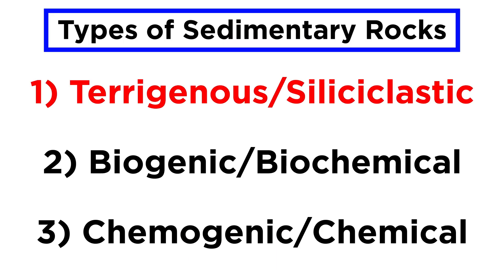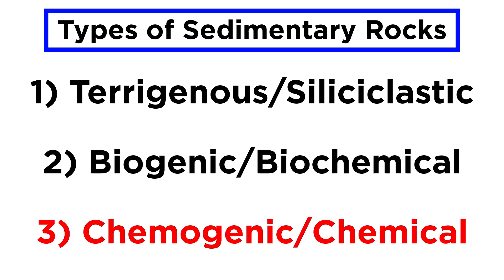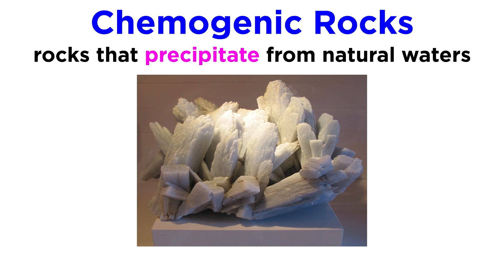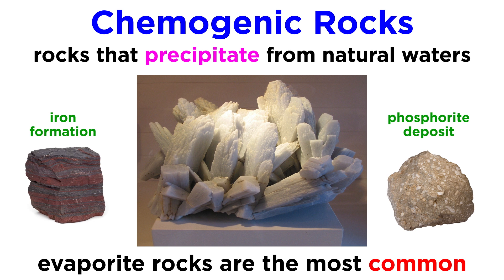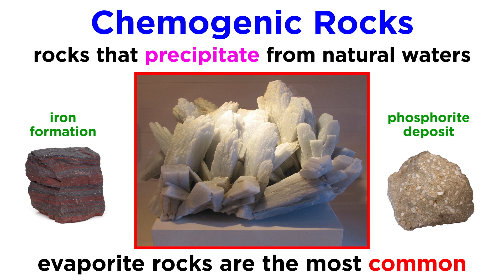Now that we have covered both siliciclastic and biogenic sedimentary rocks, we are ready to move on to chemogenic rocks. These are rocks that chemically precipitate from natural waters, often involving evaporational concentration, hence they are often called evaporite minerals. Though there are other types of chemical sedimentary rocks, such as iron formations and phosphorite deposits, this tutorial will focus on evaporite rocks since they are much more common.